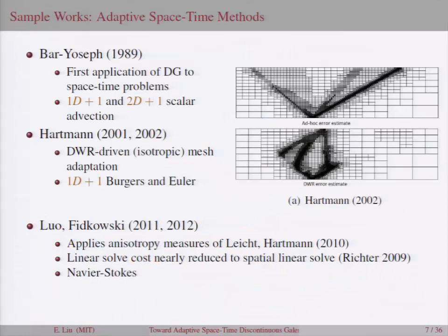The idea of using space or working in a space-time domain is not new. In 1989, Barr-Joseph was the first to apply DG to such a scheme. Hartman, in 2001 and 2002, did some DWR-driven isotropic mesh adaptation. And in 2011 and 2012, Law and Fitkowski applied anisotropy measures and also linear solver improvements to make the method more efficient. But the downside, again, of that was that they were restricted to quadrilateral meshes, which don't achieve high levels of anisotropy.